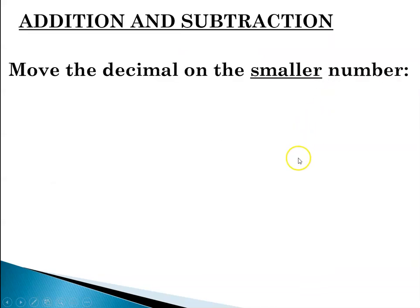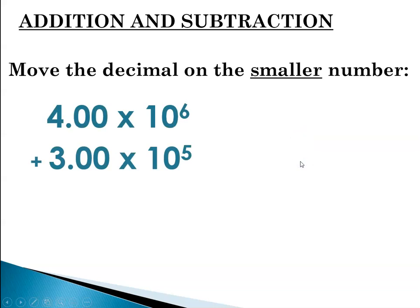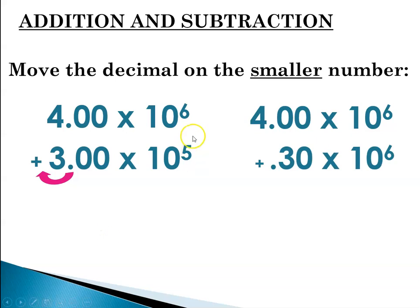So for starters, moving the decimal on the smaller number. So we've got 4 times 10 to the 6 and 3 times 10 to the 5. This is the smaller number, so we're going to move the decimal point. So that would be 4 times 10 to the 6 plus 0.3 times 10 to the 6, and that gives us 4.3 times 10 to the 6.